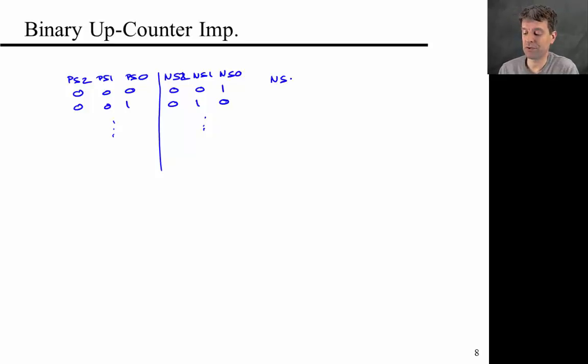Next state 0 is just going to be not present state 0. Next state 1 is going to be present state 1 XOR present state 0.